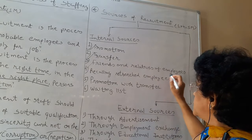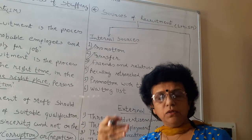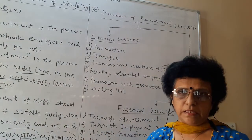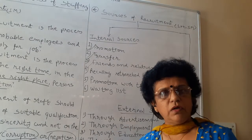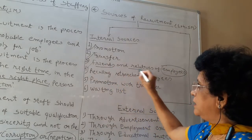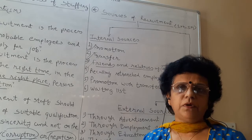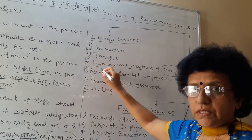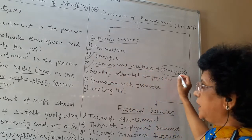Number three is friends and relatives of employees. You can ask your own employees, by giving a notice or circular, that the organization is looking for new employees. If capable people are available among their relatives, friend circle, or nearby, ask them to approach. Two benefits arise: you show that you trust your employees and give an opportunity for their family members to get a job — creating motivation, positivity, and appreciation.